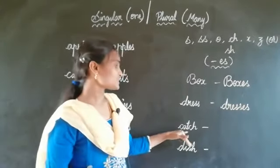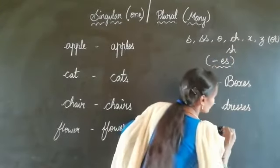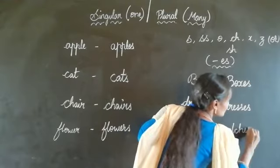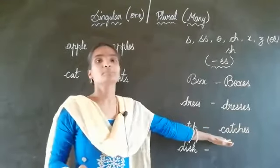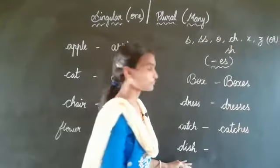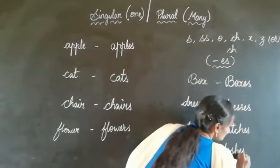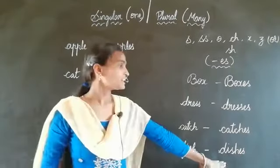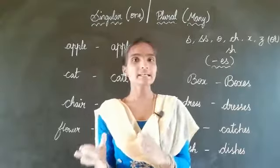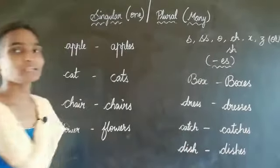See here — catch. C-A-T-C-H. We should add ES to catch, it becomes plural form — catches. And dish: for dish we should add ES to become a plural form — dishes. Did you all understand the singular and plural form? Thank you children.